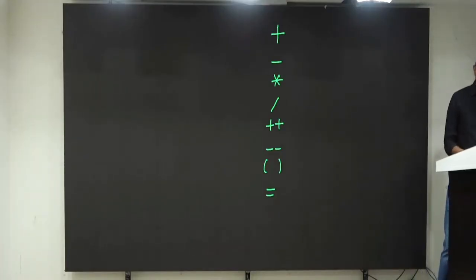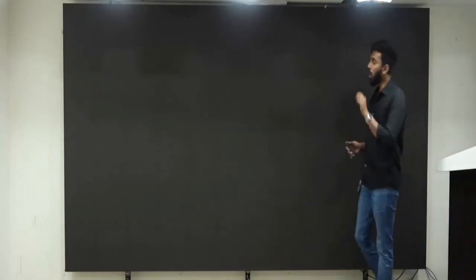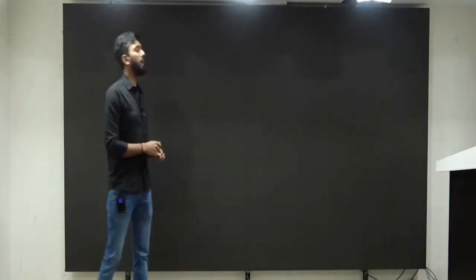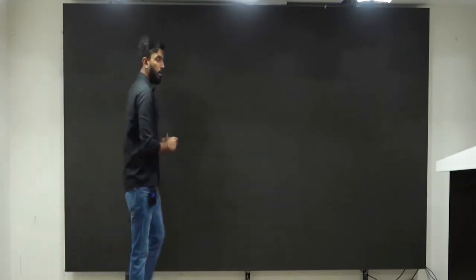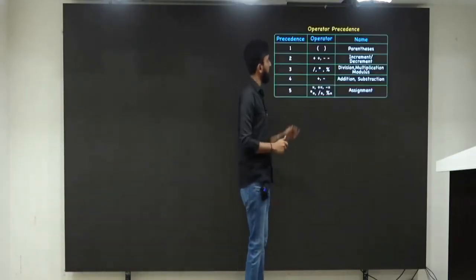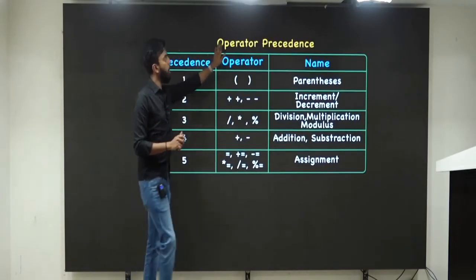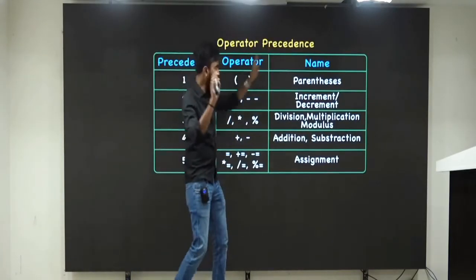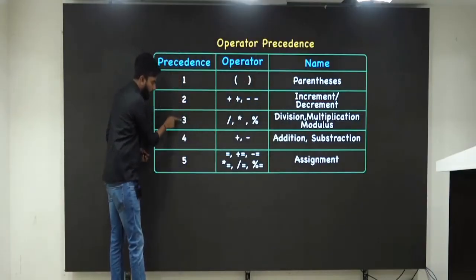First of all, you must understand something called as operator precedence. What do you mean by operator precedence? Precedence means priority. This is the operator precedence table. First priority, second priority, third priority, fourth priority, last priority.